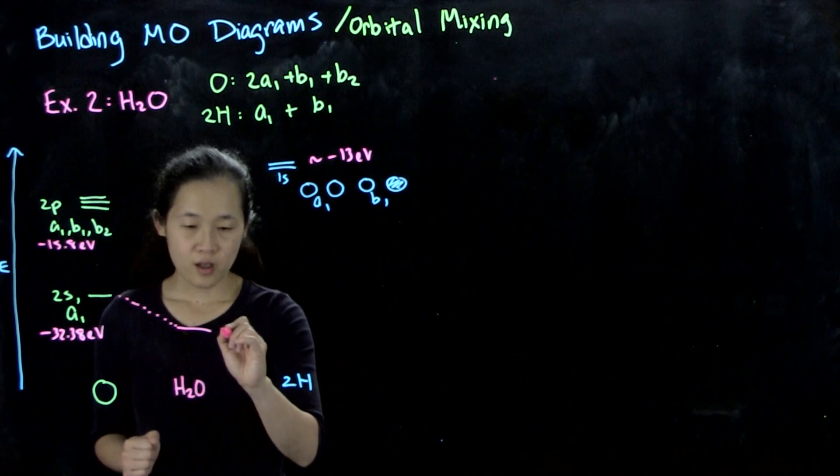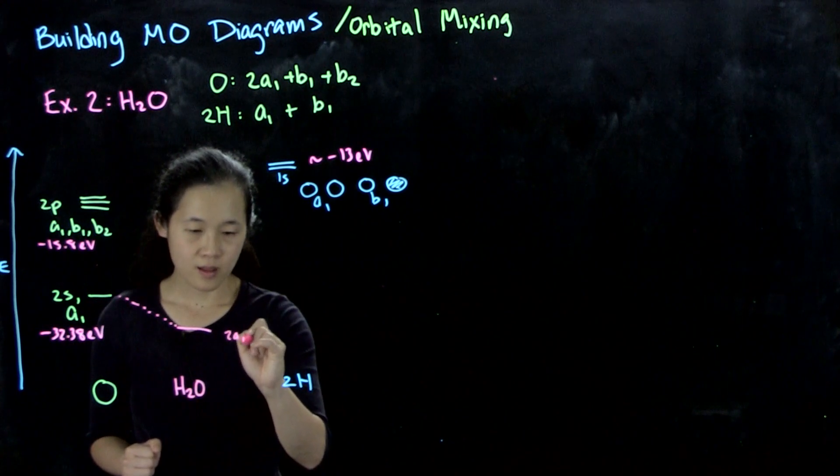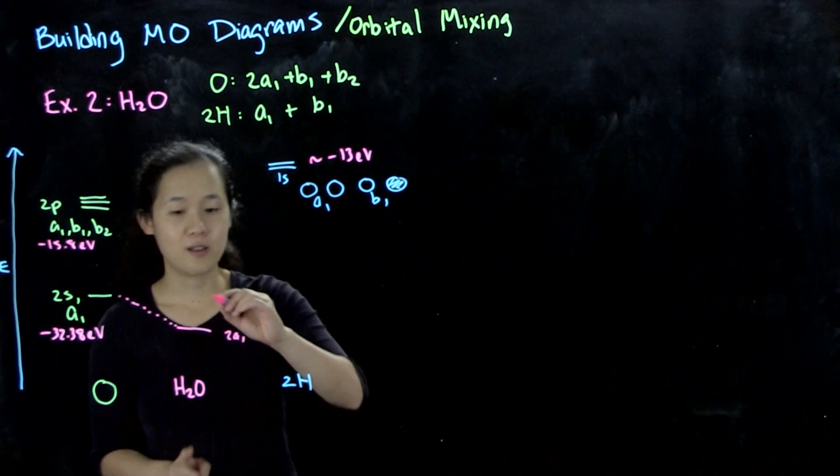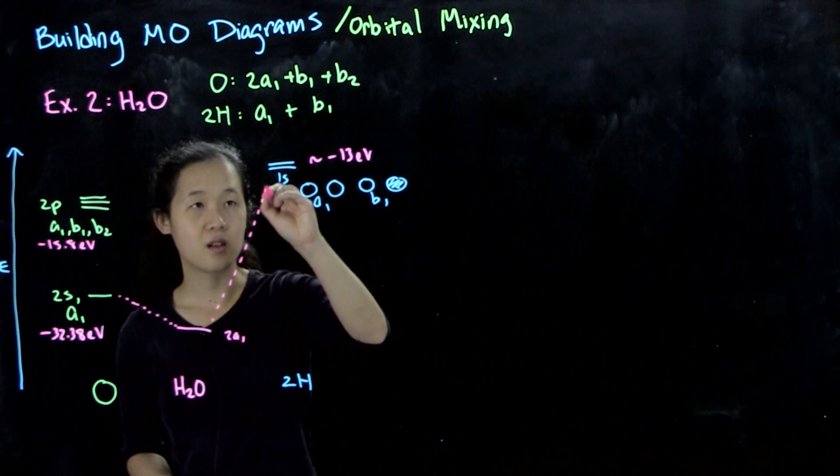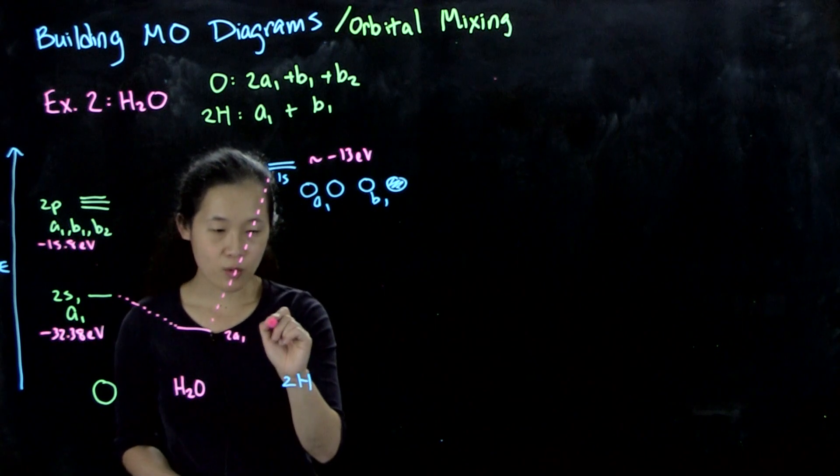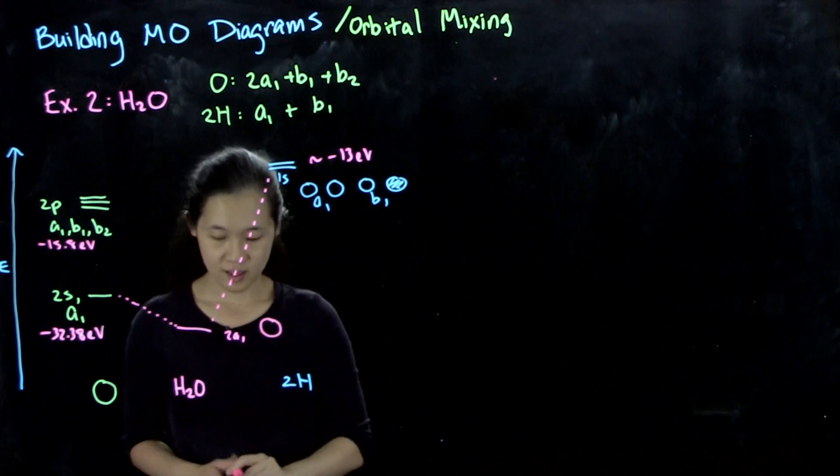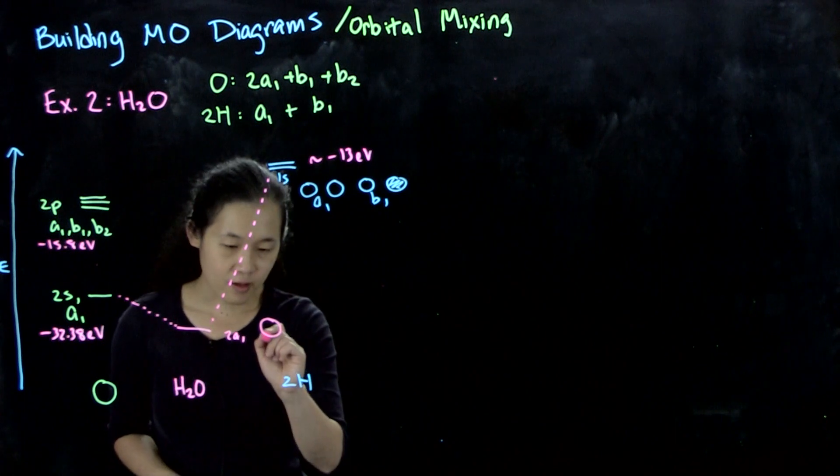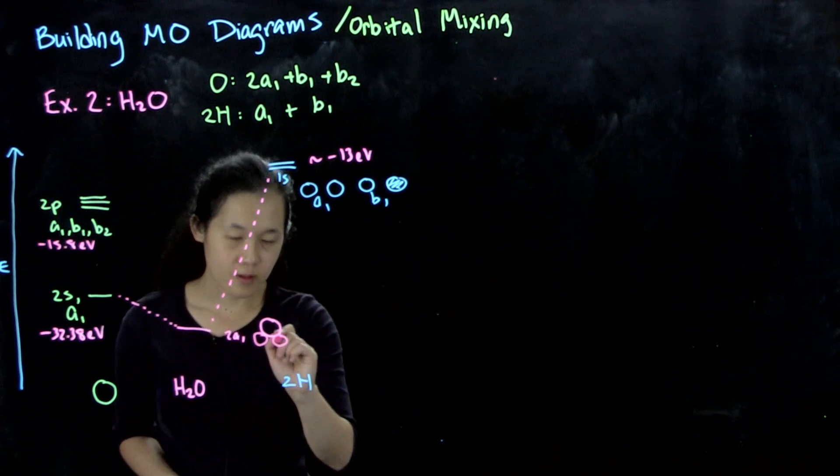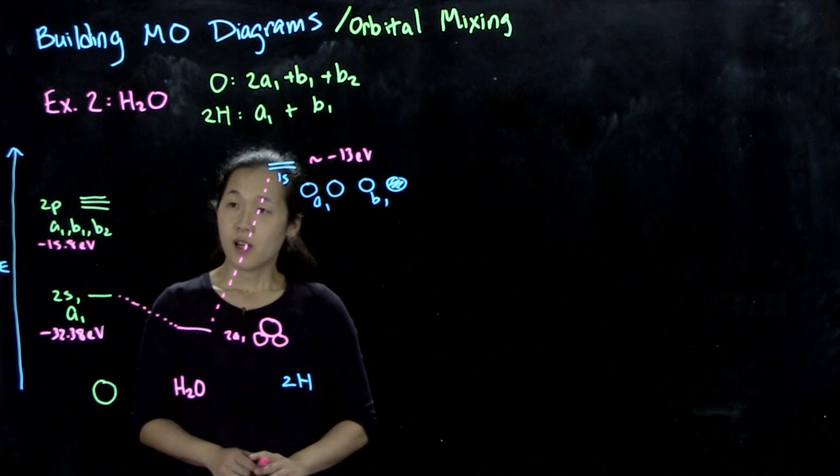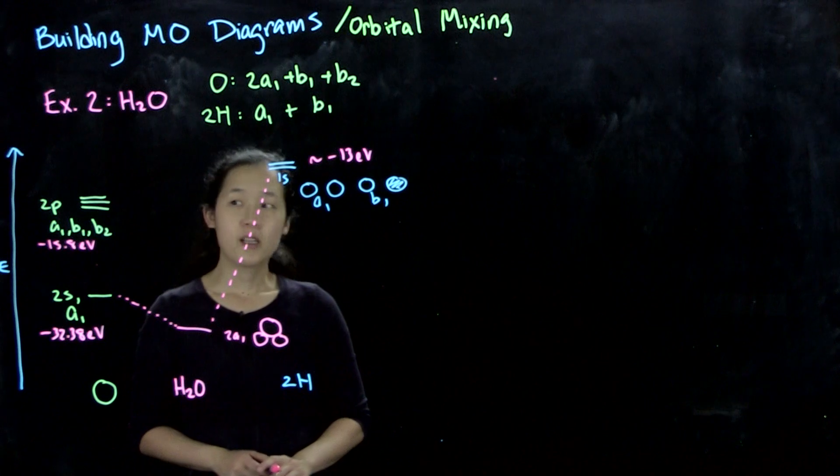Here we have this s orbital of a1 symmetry. We need to form a bonding combination, so this will be lowered. Every interaction forms a bonding and anti-bonding combination, but there are some nuances. In the middle we have H2O. This will be called our 2a1 because we're ignoring a1 contribution from the 1s orbital. This is the all in-phase combination of our oxygen 2s - they're all in phase.